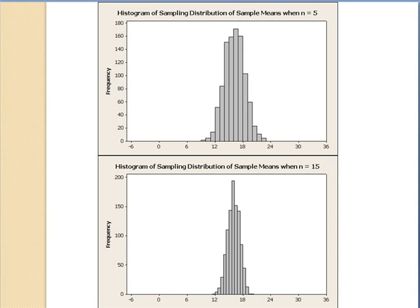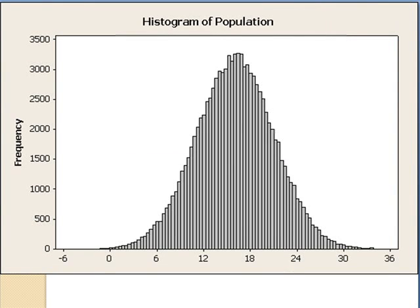The shape of both distributions is roughly normal. The means are both close to 16, but the spread of the histogram of means of samples of size 15 is smaller. Now we will look at 4 graphs, including another sampling distribution graph when the sizes of my samples were n equals 30. We will see these graphs one at a time. Watch what happens when I animate this.